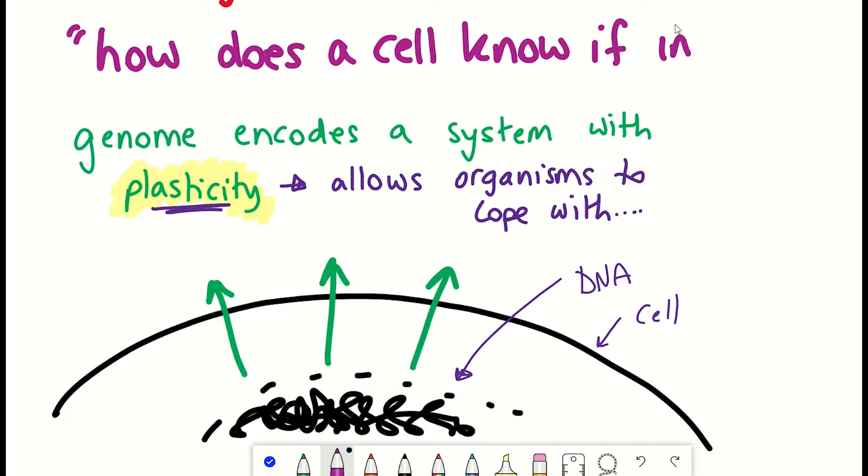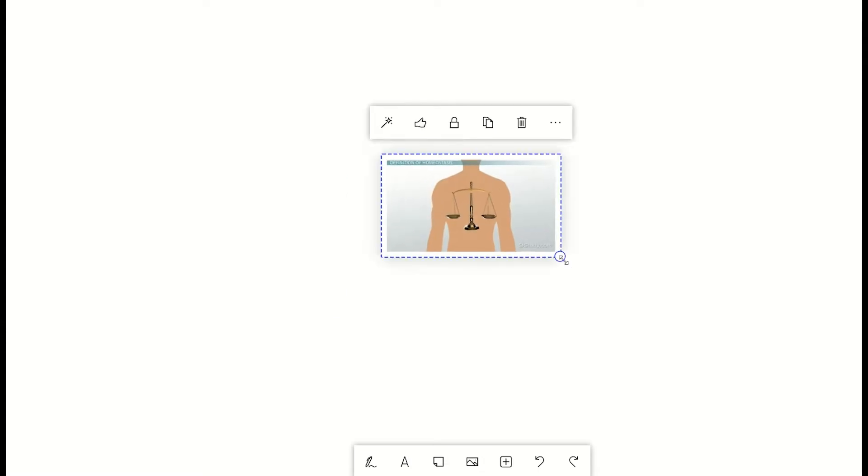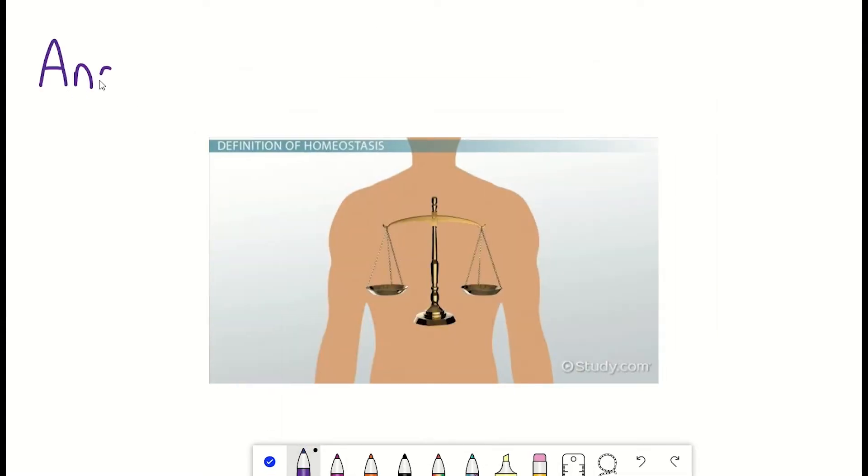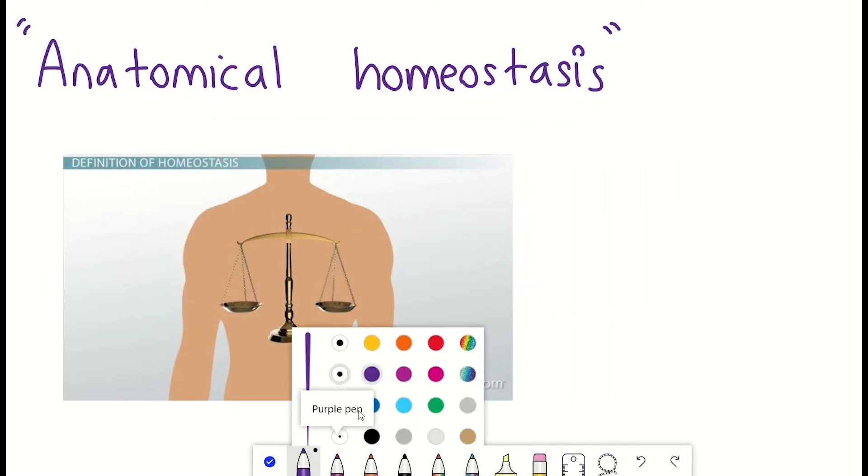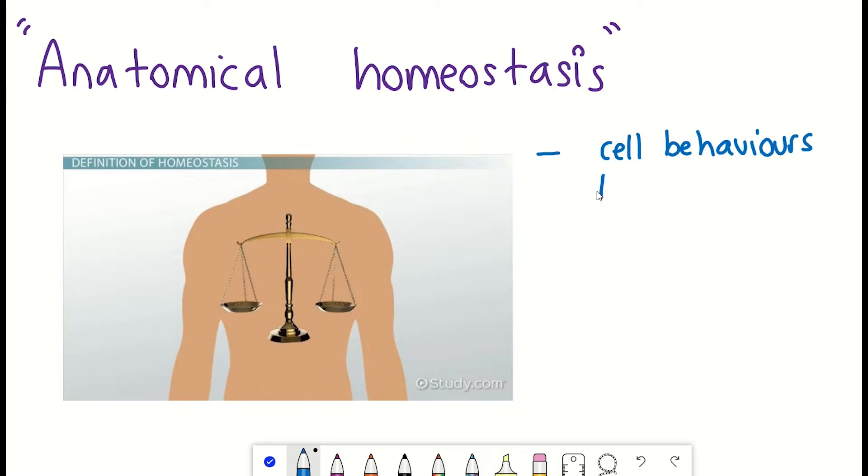But how do the cells know when everything is in the right place? How did they know they were in the wrong place? Or if they were forming the wrong structure? Well, firstly, this brings us onto the idea of anatomical homeostasis. Basically, the idea that organisms can activate cell behaviors that somehow reduce the errors between the current state and the target morphological state, the correctly formed organism.